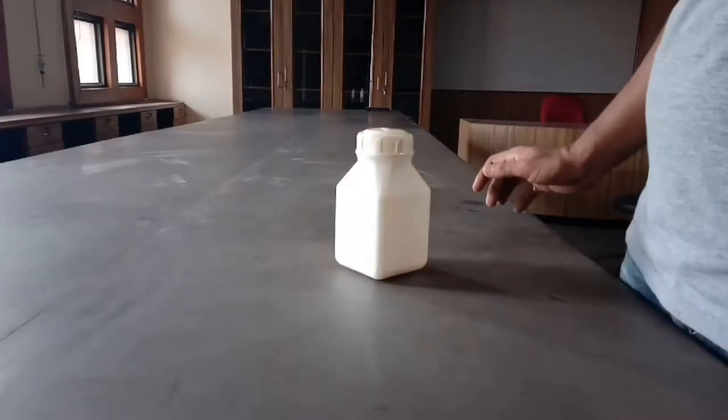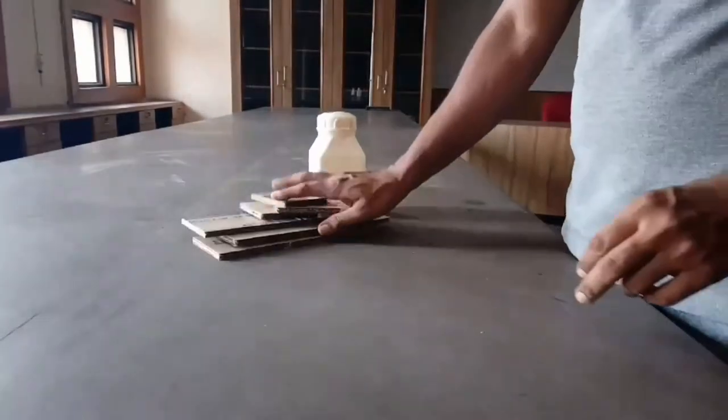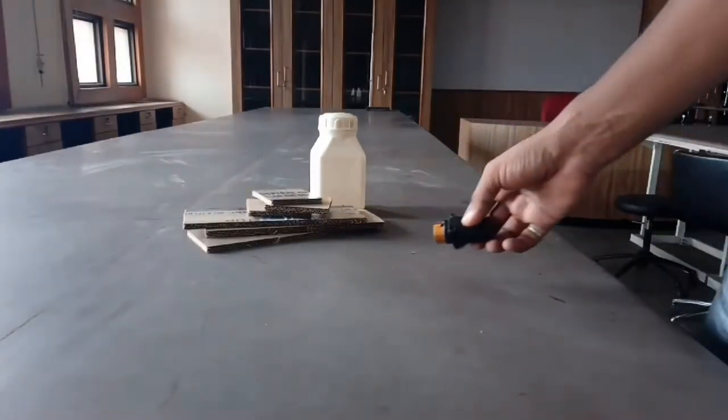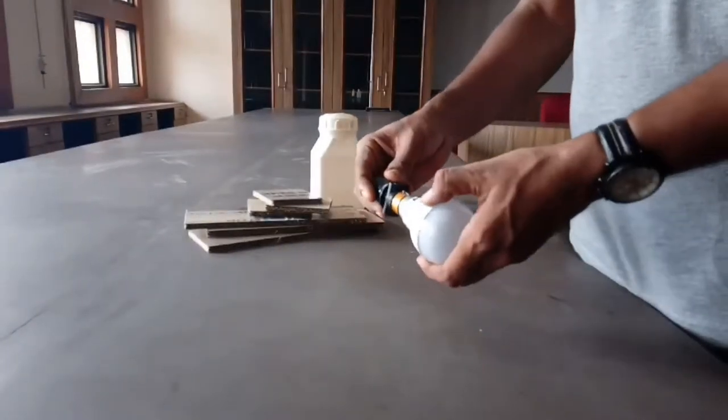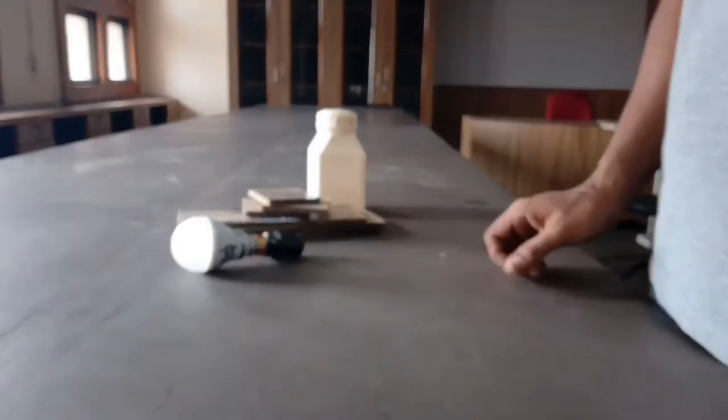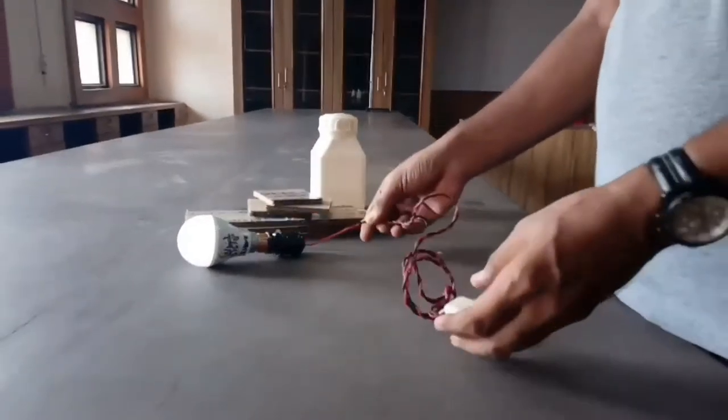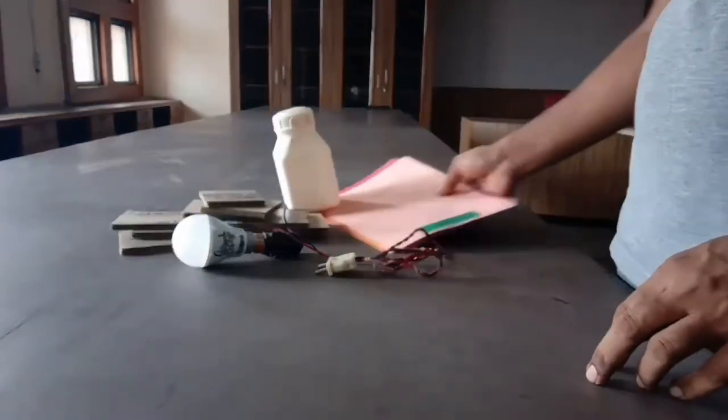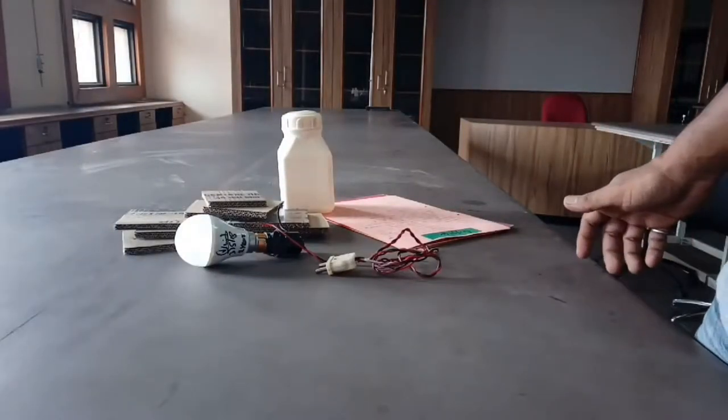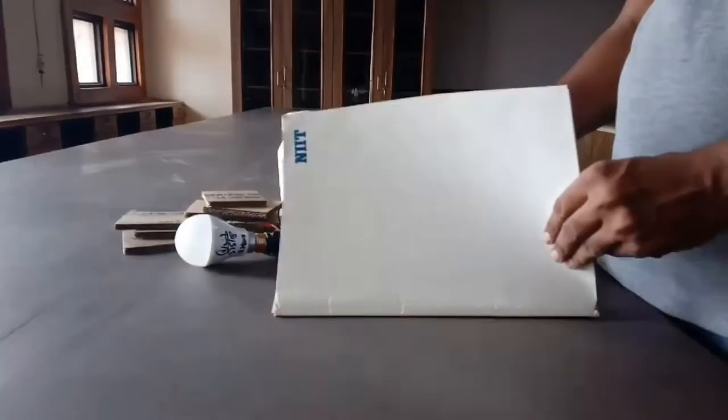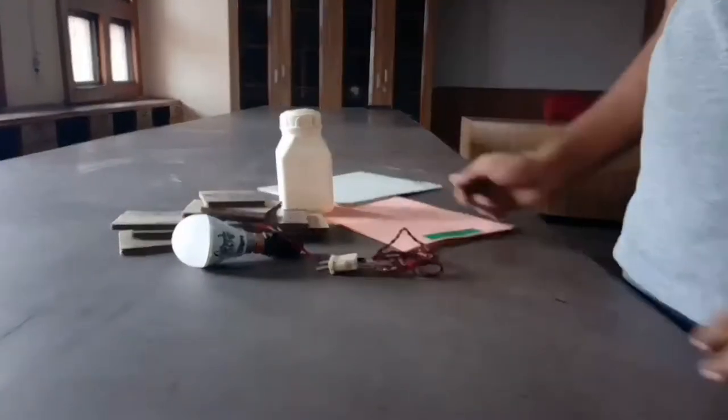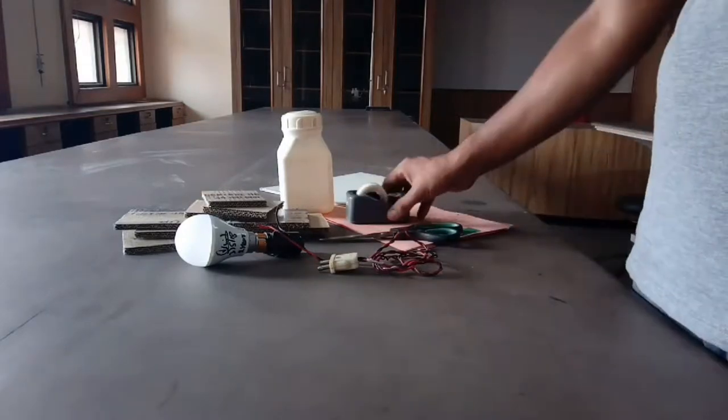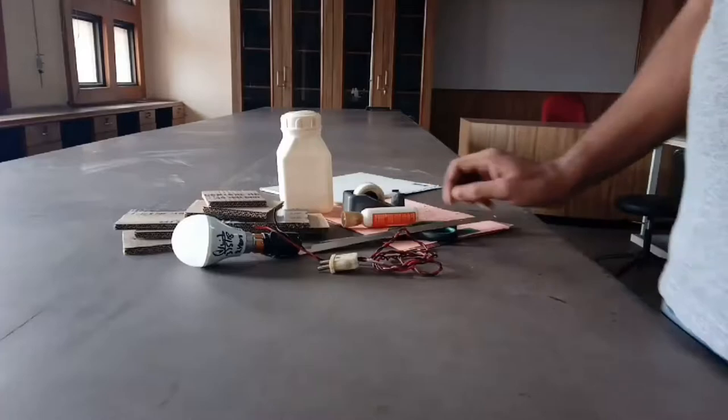Let's make this model. To make this model you need a plastic jar, cardboard pieces cut from old carton, bulb holder, wire about 1.5 meter long, some rough sheets, old file for its thick cover, scissor, tape, fabric, oil, scale, pencil etc.